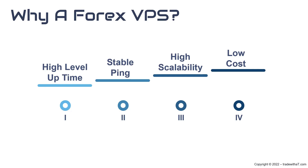Working with an automated trading strategy will quickly require you to have a VPS. You can run this strategy on your PC, however you cannot guarantee to have internet all the time or that your PC is up all the time. A VPS is basically a server installed in a big data center where you always have electricity and internet, so you have a high level of uptime.